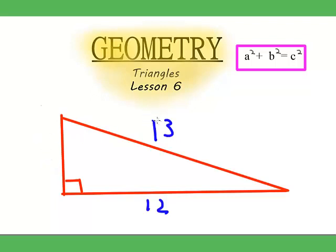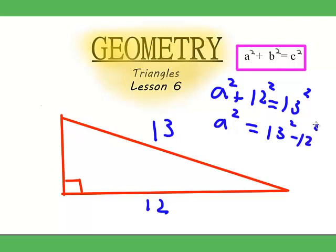Well, since this is C and this is B, so we know A squared plus 12 squared is equal to 13 squared. So, A squared is equal to 13 squared minus 12 squared. And, A is equal to square root of 13 squared minus 12 squared, which means A is equal to 5.